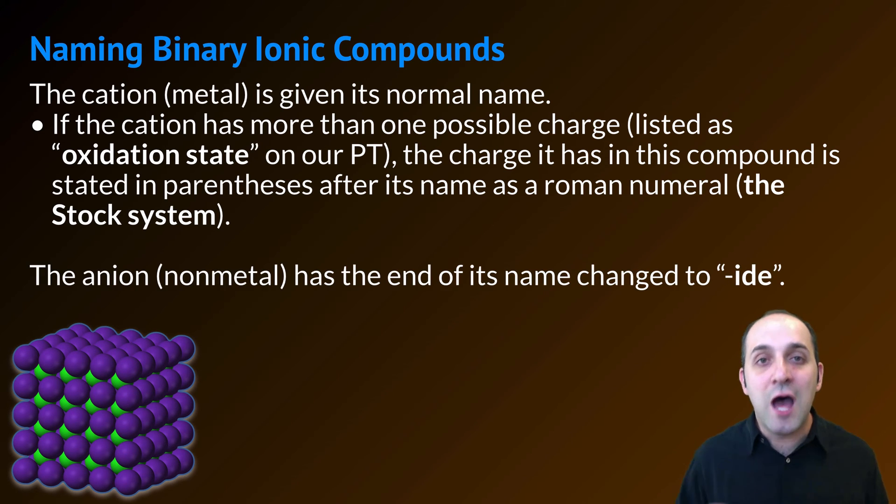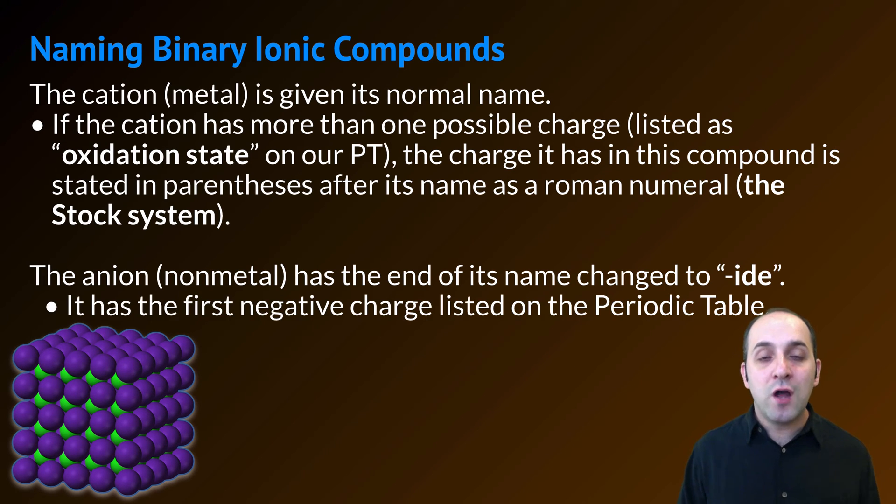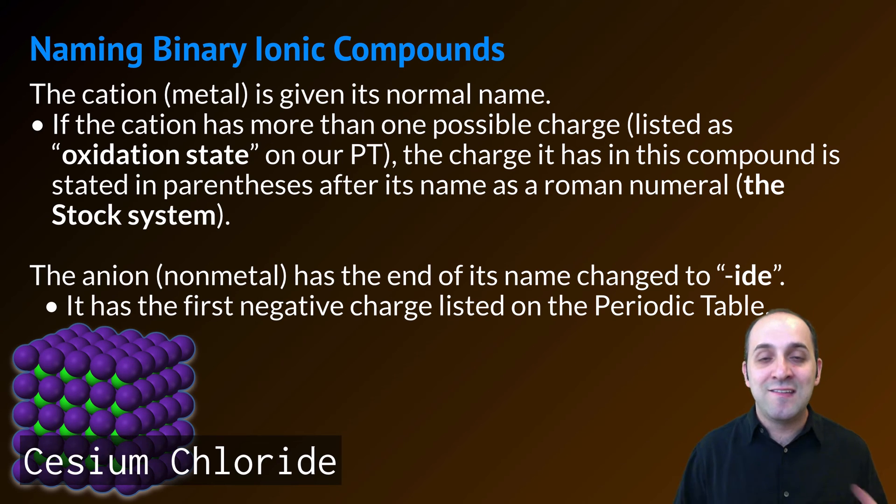The anion, or the non-metal, is just going to have the end of its name changed to -ide. It's important to understand that the anion is always going to have the first negative charge, the one at the top that's listed on the periodic table. So for our substance here made out of cesium and chlorine, its correct name is cesium chloride. I don't have to use the stock system because cesium is a group 1 metal. It will only have a 1+ charge.